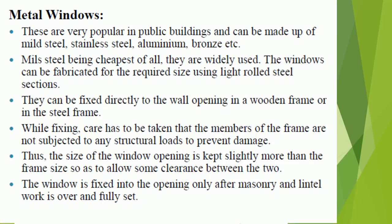Metal windows are very popular in public buildings and can be made of mild steel, stainless steel, aluminium, bronze, etc. Mild steel, being the cheapest, is widely used. The windows can be fabricated for the required size using light rolled steel sections, and can be fixed directly to the wall opening in a wooden frame or in a steel frame.